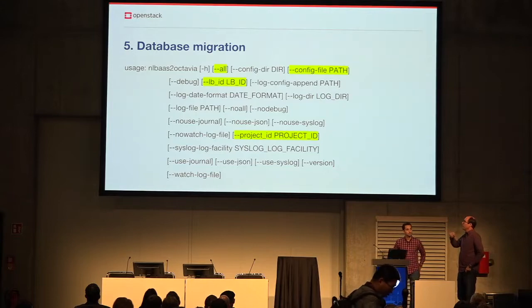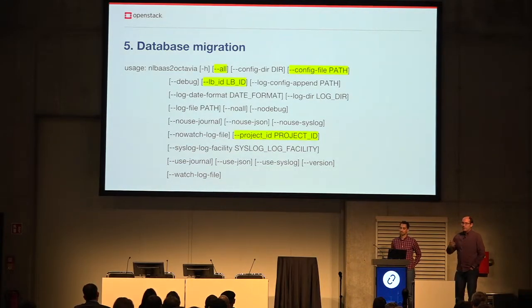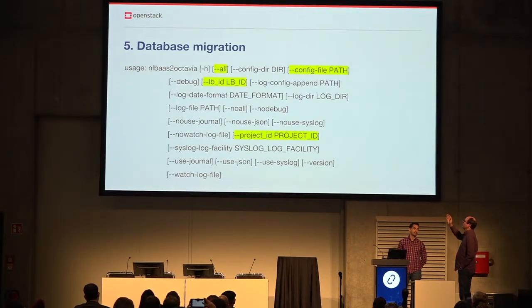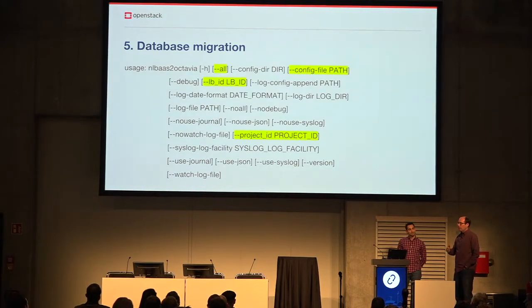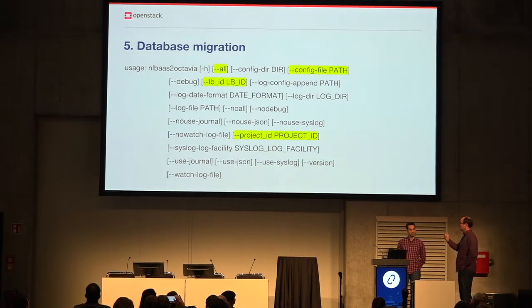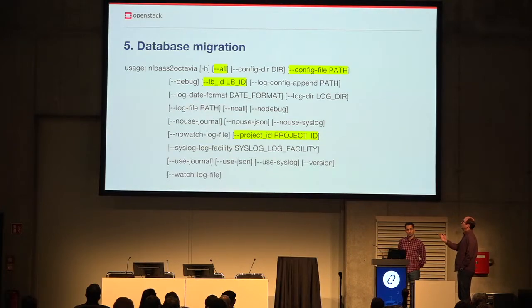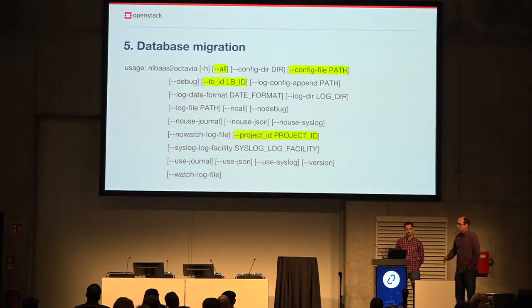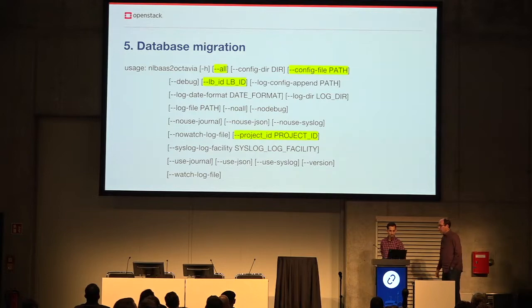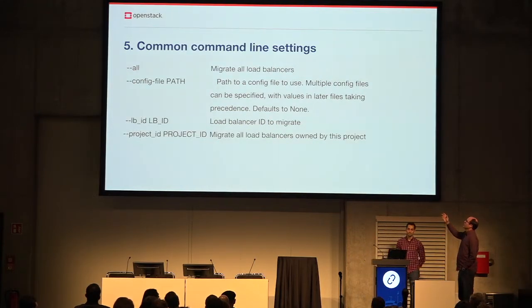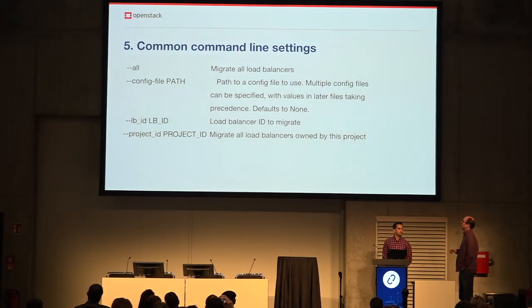The tool is called nlbaas-to-octavia — a very descriptive name. Key options include: 'all' to migrate all load balancers in your Neutron LBaaS database; a config file option using Oslo config format; a load balancer ID if you only want to migrate one load balancer; and a project ID if you want to migrate a specific project for testing.